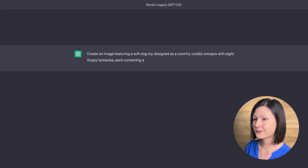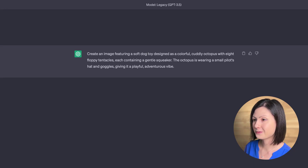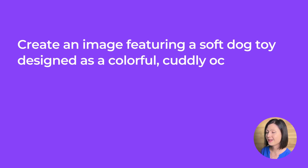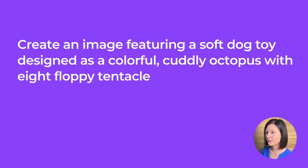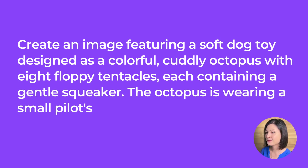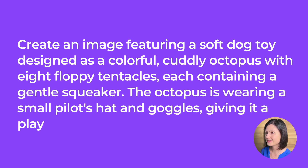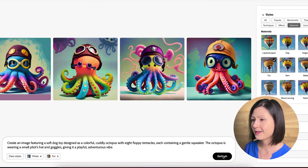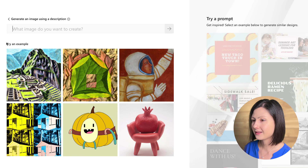For the first round, our prompt is as follows: Create an image featuring a soft dog toy designed as a colorful cuddly octopus with eight floppy tentacles, each containing a gentle squeaker. The octopus is wearing a small pilot's hat and goggles, giving it a playful adventurous vibe. Let's paste the prompt into Adobe Firefly, Microsoft Designer and Canva and see what we get.